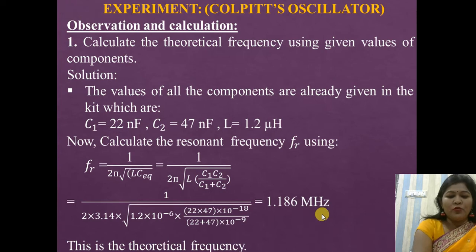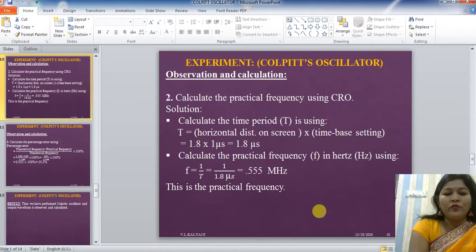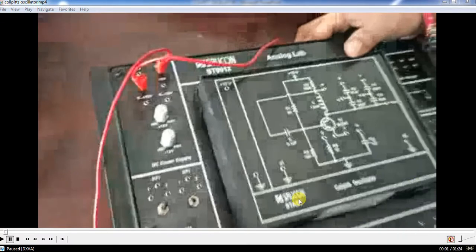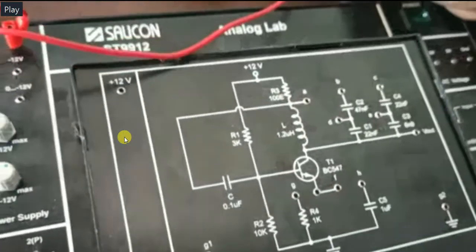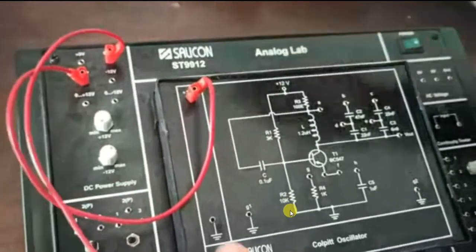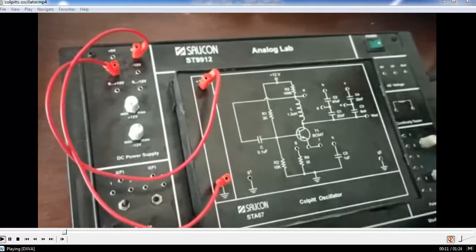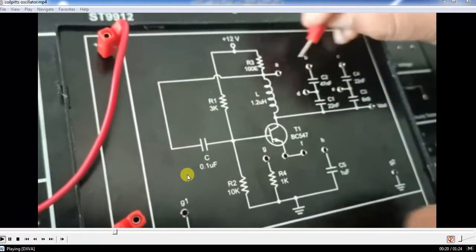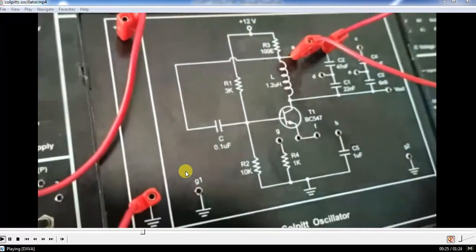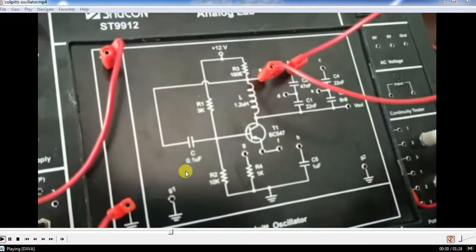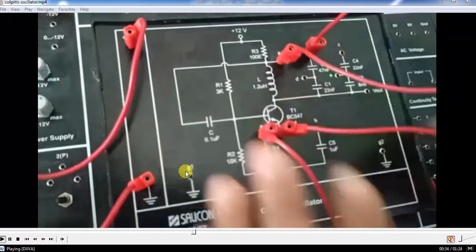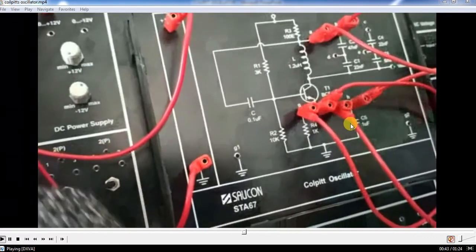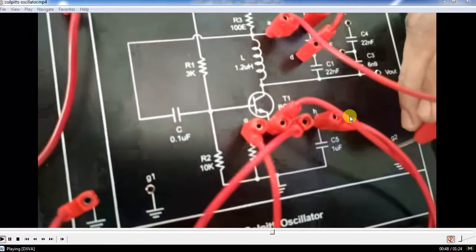Now perform the experiment using the analog board. Connect the 12V supply and ground terminal as indicated. Connect patch cords between points A and B, then between D and G1. Connect patch cords between F and H, and between G and T1. Connect the CRO using a crocodile probe between the output and the ground terminal. Switch on the supply and observe the output waveform on the CRO.